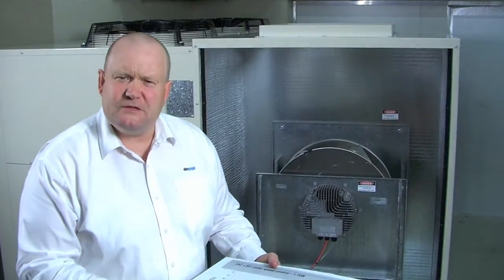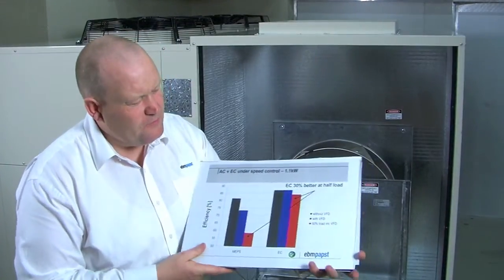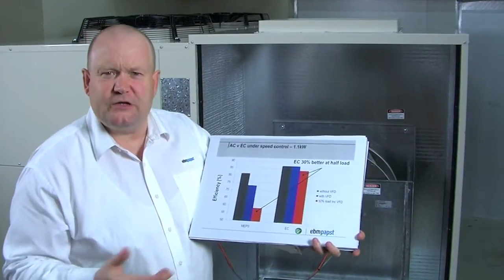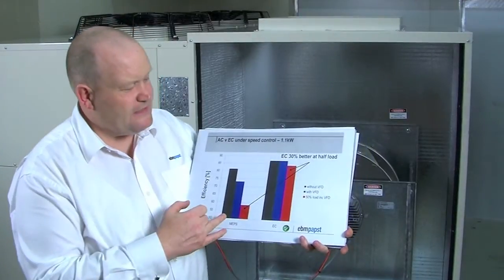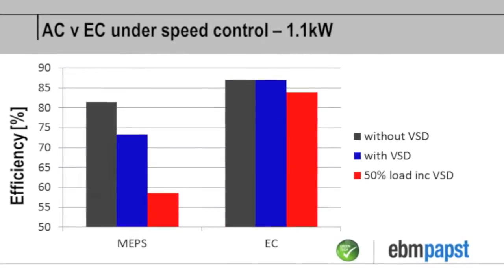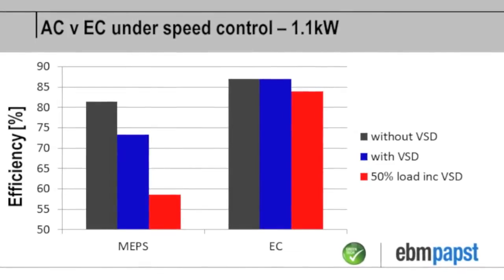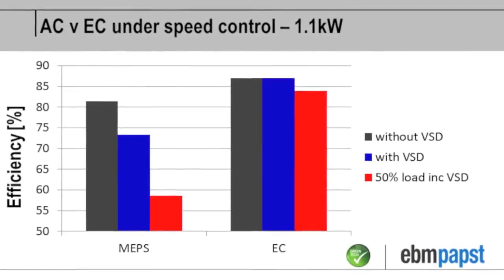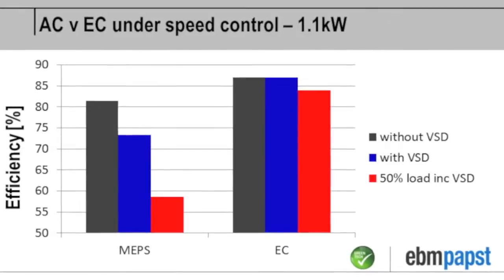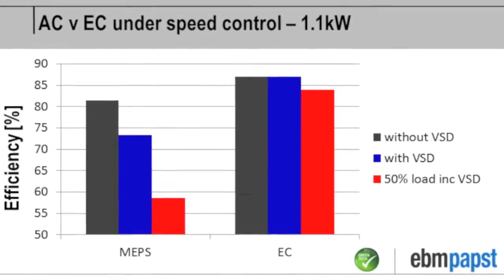So what happens when you speed control it? Well here again I've done a comparison of the products under speed control. Here you can see in the black the motor efficiency itself. In the blue what happens to the product if I add a VSD? So the blue with respect to the MET product drops because there's losses inside the VSD.